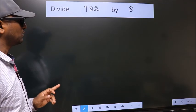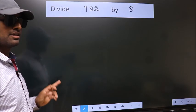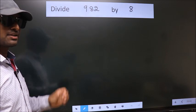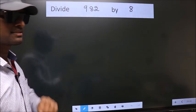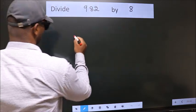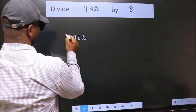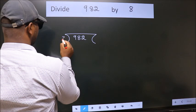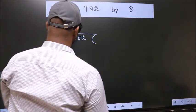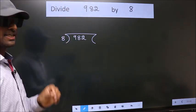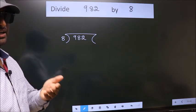Divide 982 by 8. To do this division, we should frame it in this way: 982 here, 8 here. This is your step 1.